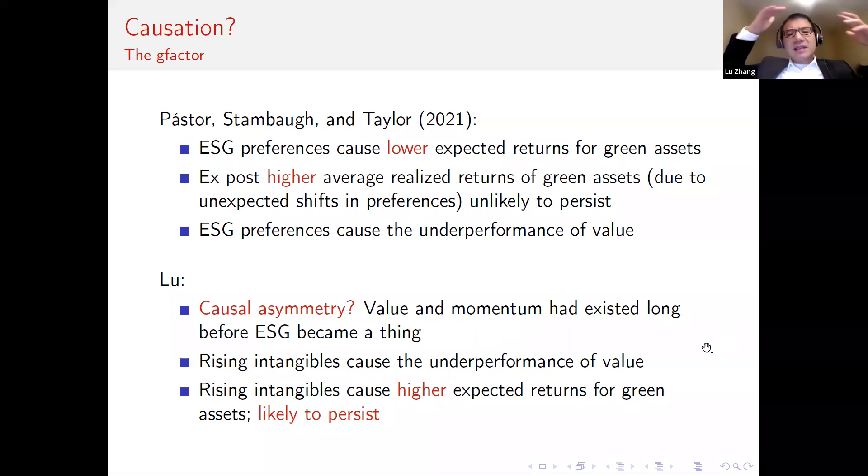And I've argued earlier, the value could be driven by tangible investment and the intangible investment may be underlying the momentum factor. And to the extent that intangibles have become more important in the past 20 years or so, the momentum mechanism becomes more important relative to the tangible investment mechanism behind value. So that may be causing the underperformance of the value premium in the past 10, 20 years. So if this mechanism is correct, then rising intangibles may also be causing the higher expected returns for green assets. If this is equilibrium factor premium, then the green factor premium will likely persist going forward.